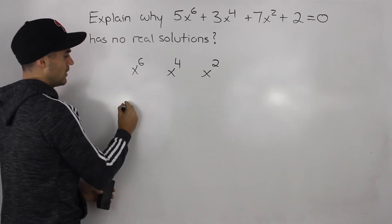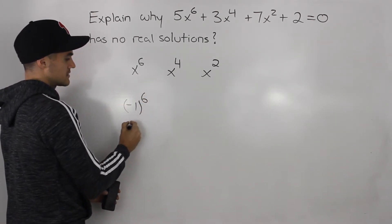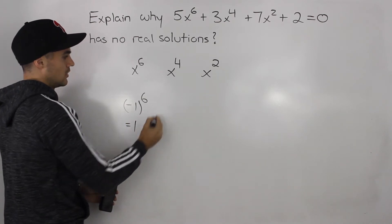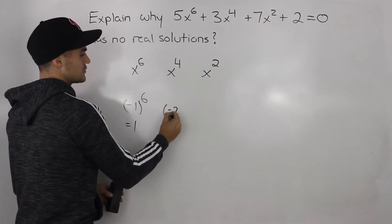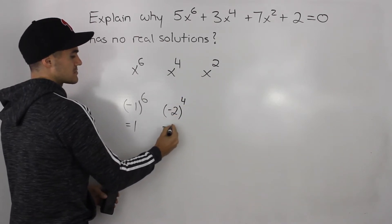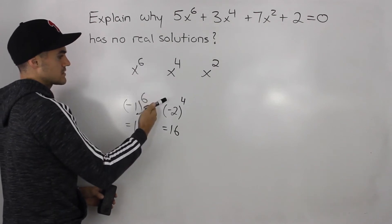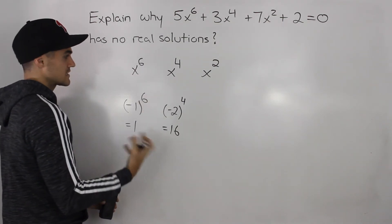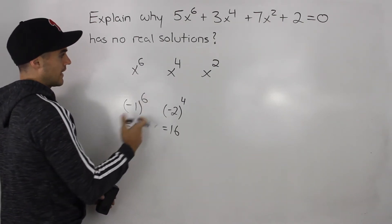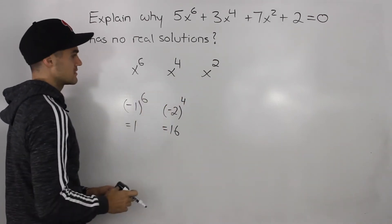Because if we plug in negative 1 for x, negative 1 to the power of 6 gives us positive 1. Or if we plug in negative 2 for x, negative 2 to the power of 4 gives us positive 16, and negative 2 to the power of 6 would give us positive 64. Any positive numbers we plug in for x, all of these will be positive, obviously.